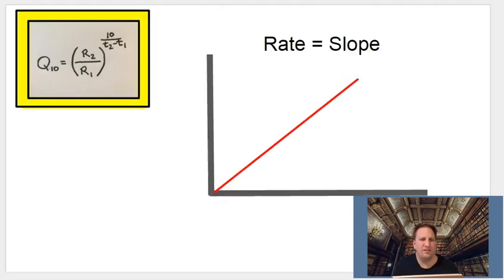All right, so now let's talk about rate. What does rate mean? When someone says a reaction rate, they really mean how quickly something is happening. You can think of the rate as a slope. If the x-axis was time and the y-axis was how the reaction is proceeding, if it's increasing over time, that's going to be a rate.